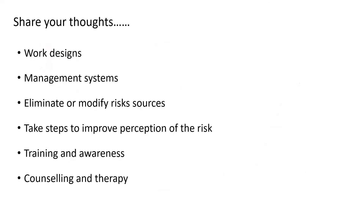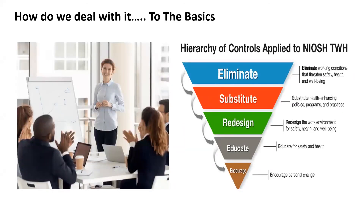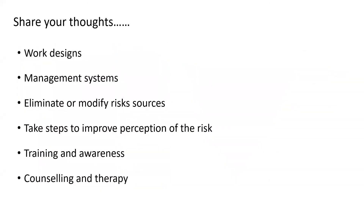Let's share our thoughts and wrap up. Go to the chat box — in terms of the hierarchy of controls applied to total worker health, where do you see work designs? Does it fall under eliminate, substitute, redesign, educate, or encourage? Also, where would management systems fall? And where does training and awareness fall with regards to the hierarchy of controls?